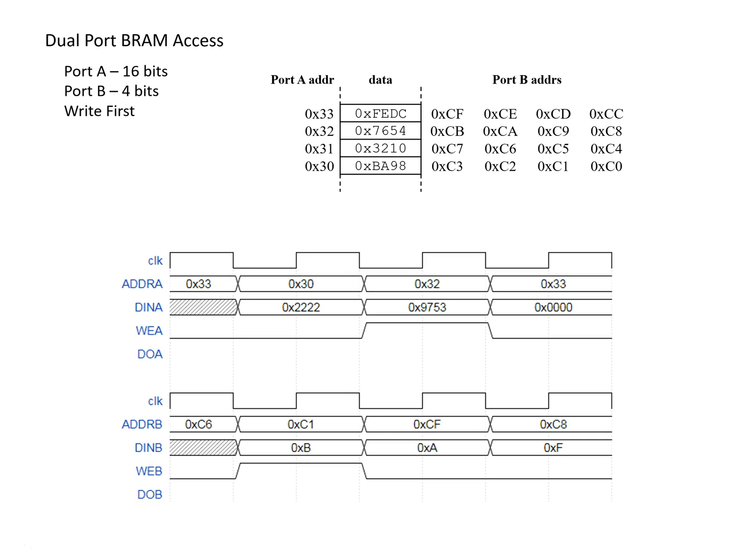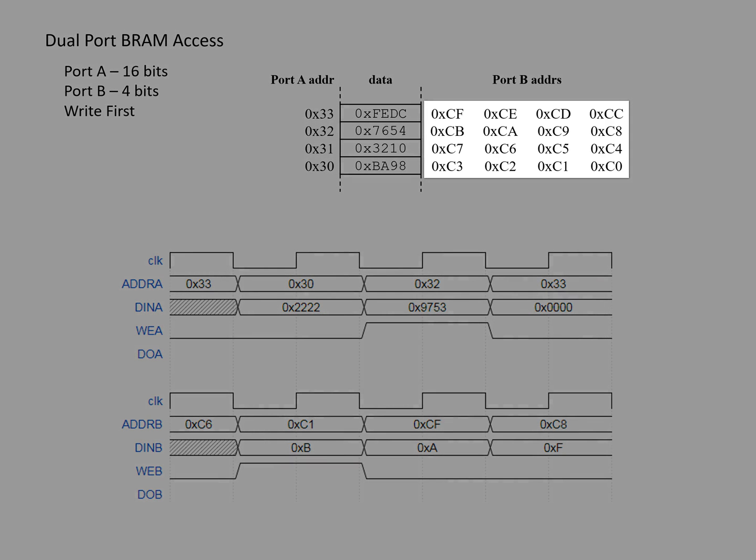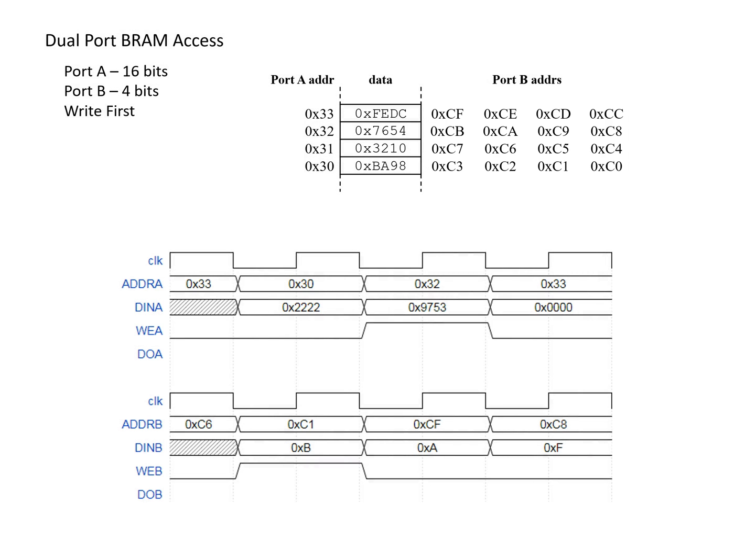From the perspective of port B, each 4-bit entry has its own address. So for each row shown in this figure, we really need four separate addresses — one for each 4-bit chunk or 4-bit hex value shown within the data section. Comparing 16-bit entries versus 4-bit entries, we have four 4-bit entries for every one 16-bit entry.